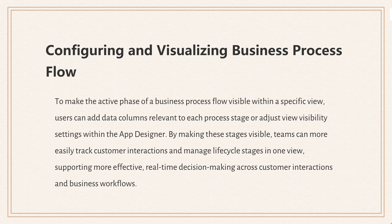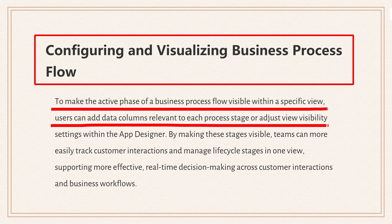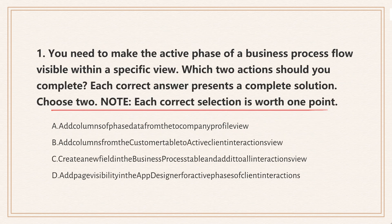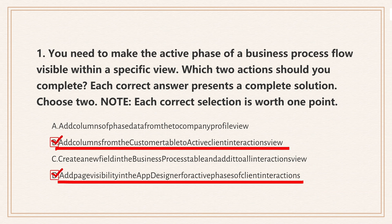The knowledge point of this question is configuring and visualizing business process flow. To show the active phase in a specific view, you can add columns or adjust visibility in the App Designer. This helps teams easily track where they are in a process. So the correct answers are: adding columns from the customer table to the view, and adjusting visibility in the App Designer to highlight active phases so users can quickly see where things stand with a client.